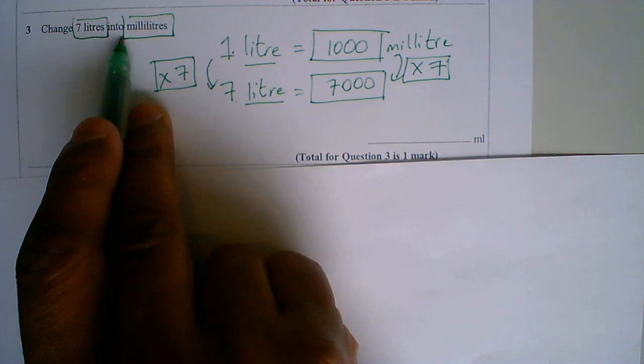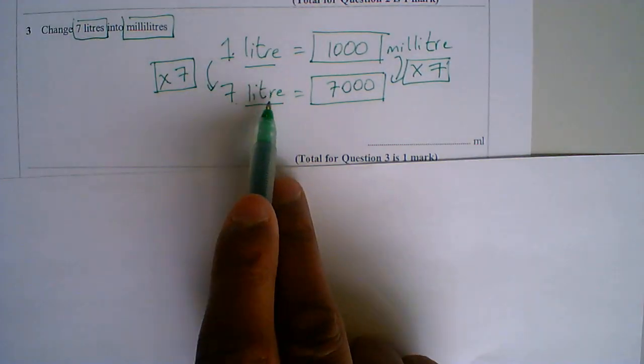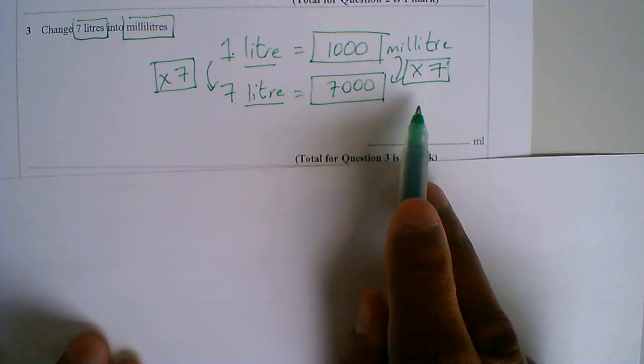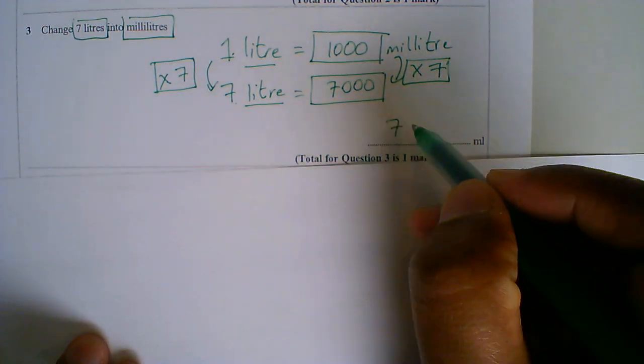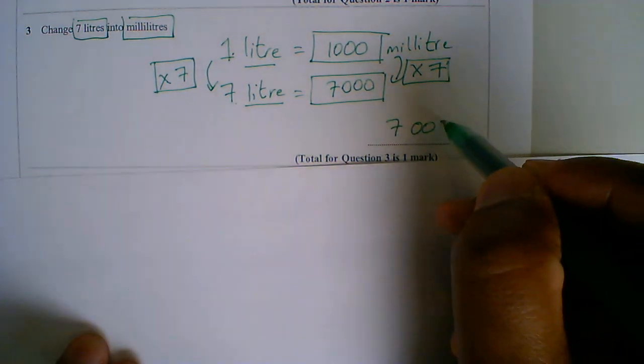So change 7 litres into millilitres. Put the litres together and I can work out my millilitre. So my answer is 7000 millilitre.